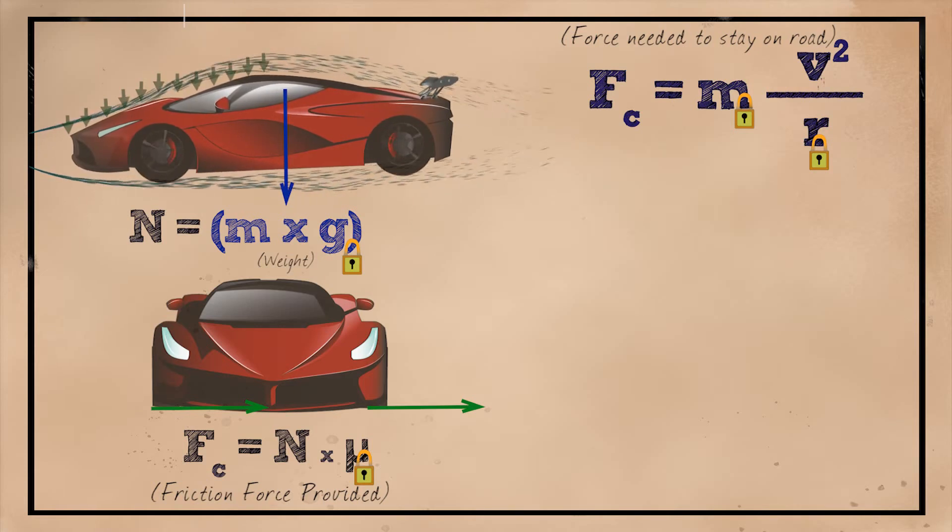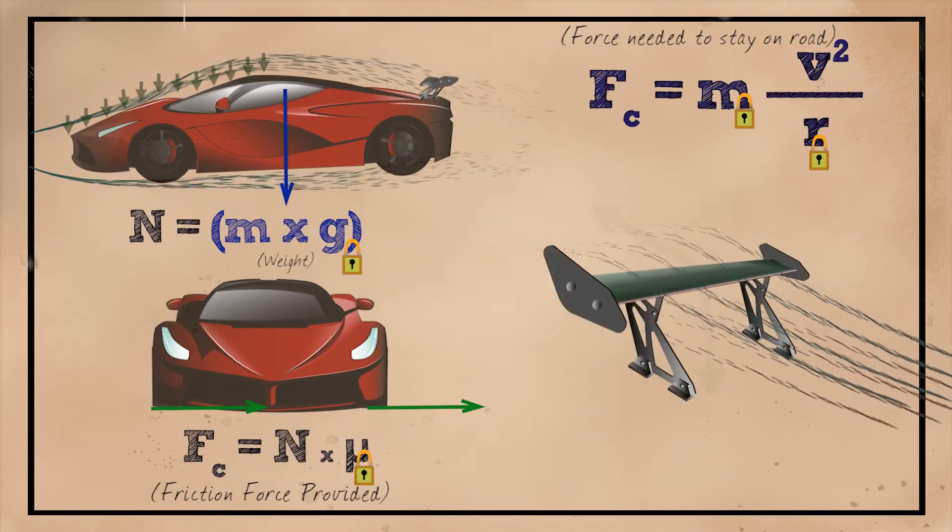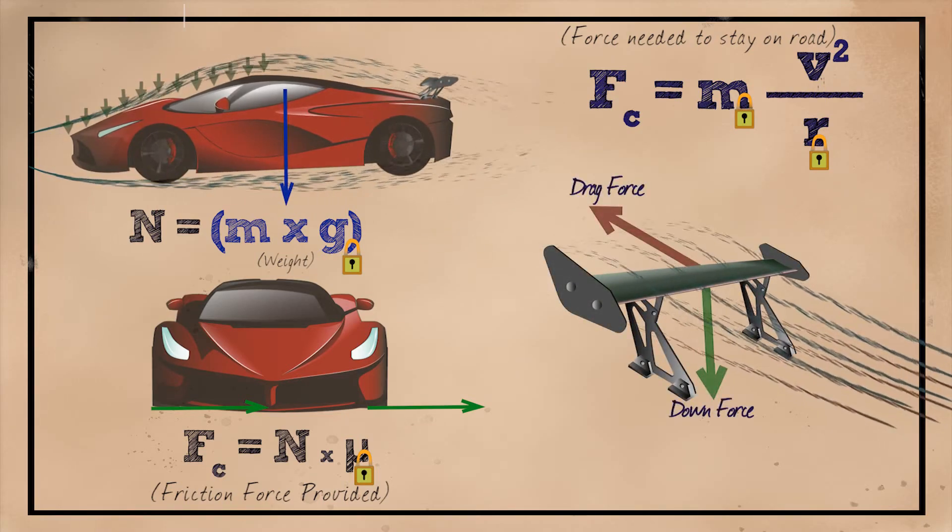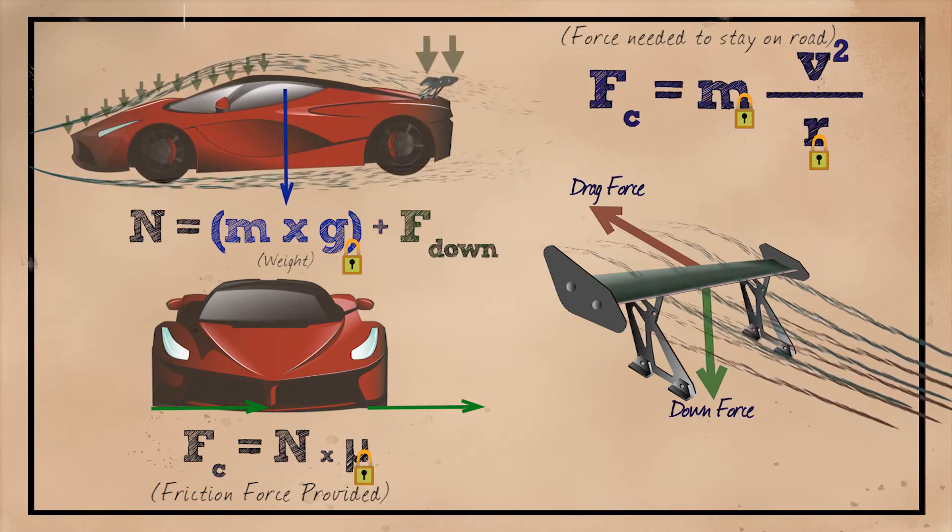This is where the wing comes into play. A wing can generate downforce solely through clever aerodynamics. The engine will have to work only slightly harder to overcome the added drag from the wing, which is not a problem for racing cars, since fuel economy is not really an issue.